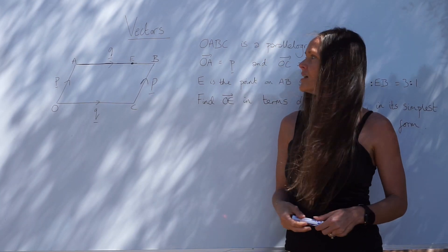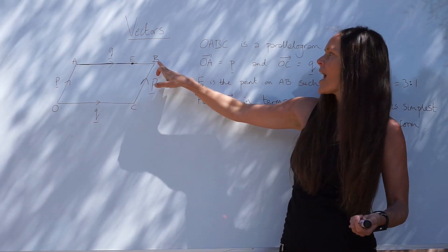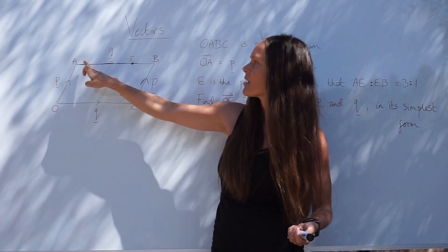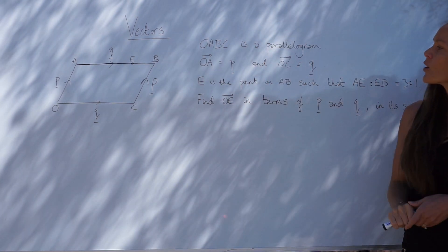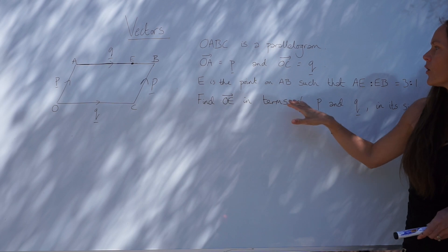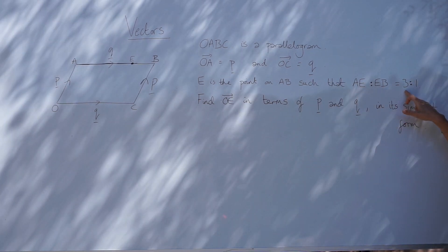They have the same vector. So if you're travelling from A to B, it's vector Q. And if you're travelling against the arrow, it would become negative Q. So we know that E is the point on AB, such that AE to EB is equal to 3 to 1.